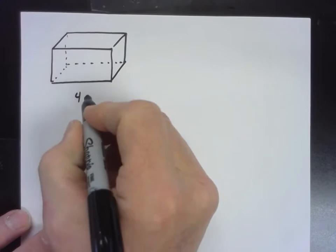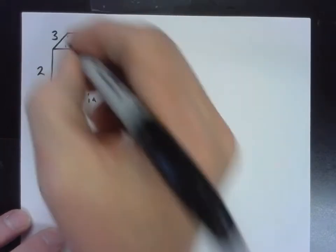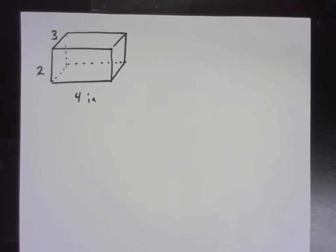So first of all, we have to have a three-dimensional figure in order to find the surface area. This is all in inches. So a figure that has three dimensions. This one has width, it has height, it has depth, doesn't it? And this is called a rectangular prism. You guys probably call it a box, right? Okay, so in math, we call this a rectangular prism. How many faces does it have? Six, six sides, six faces.